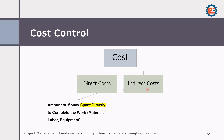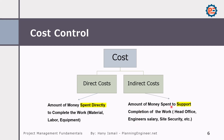Indirect costs are costs that we cannot segregate or assign to a specific activity. For example, the amount of money spent to support completion of the work — like the head office, engineering salary, etc. You cannot assign this cost to a specific activity in your project, that's why we call them indirect costs, and they will be distributed over all the projects.